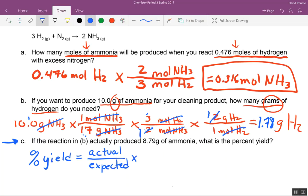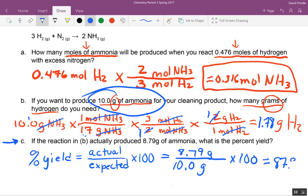Now it says if the reaction in B actually produced, so where is that number going? On the top. Where's my expected amount? Right here, because it says that's what we wanted to produce. Now any experiment you do you will never get what you expect unless you do it absolutely perfect. You know you can get close but it's very hard to get 100%. So this is going to be an 87.9% yield.